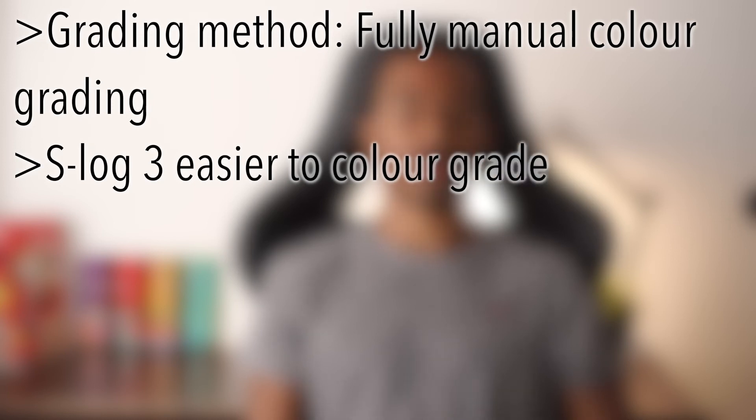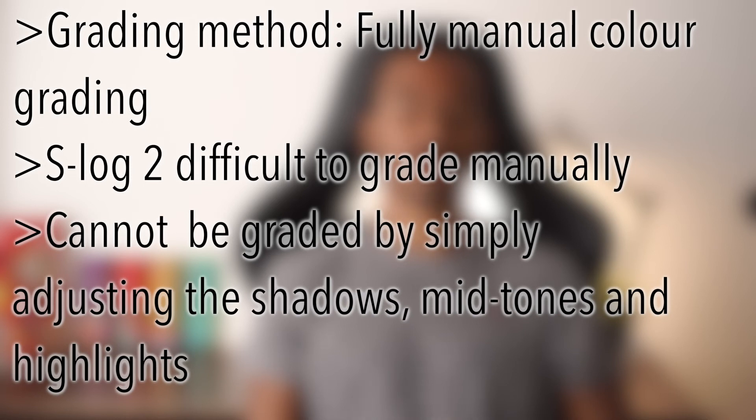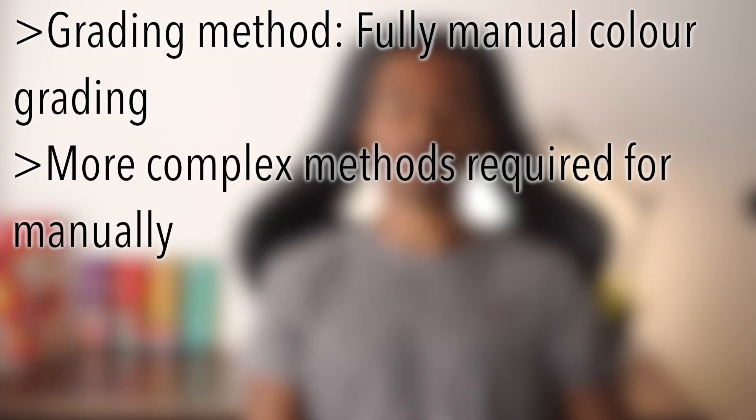For color grading S-Log footage, generally it's easier to color grade S-Log3, but it depends on which method you're using. If you're using S-Log2 or S-Log3 specific LUTs, or the ACES workflow, both profiles will have equal difficulty in grading. But if you're manually grading, S-Log3 will be easier. This is due to the shape of the log curve, which can easily be normalized or graded simply by adjusting the shadows, midtones, and highlights. Adjusting the shadows and midtones of the S-Log2 curve will result in crushed shadows and requires more complex methods for manually grading.